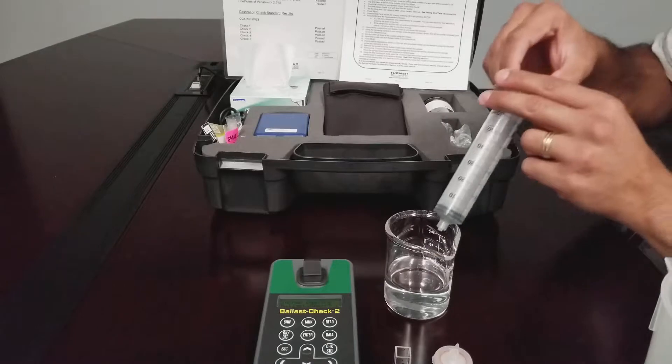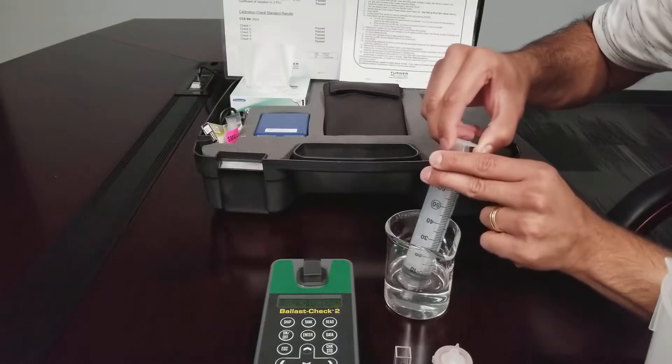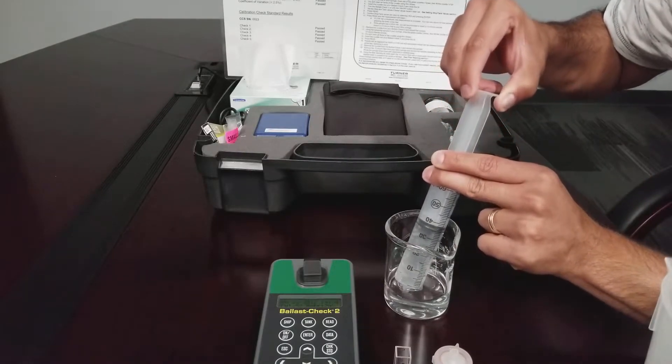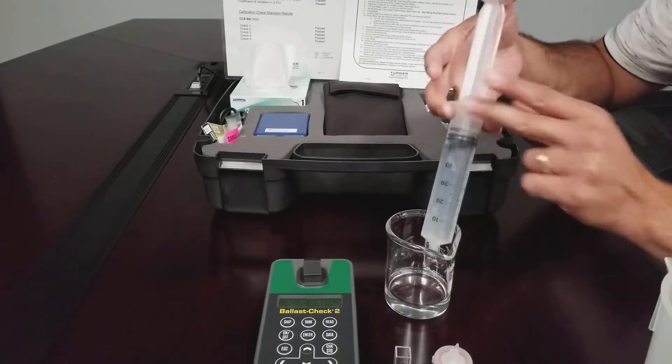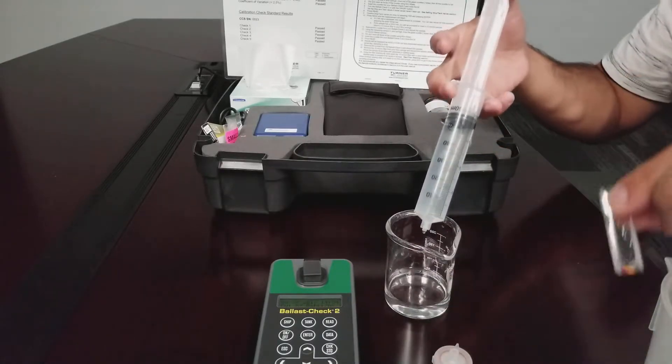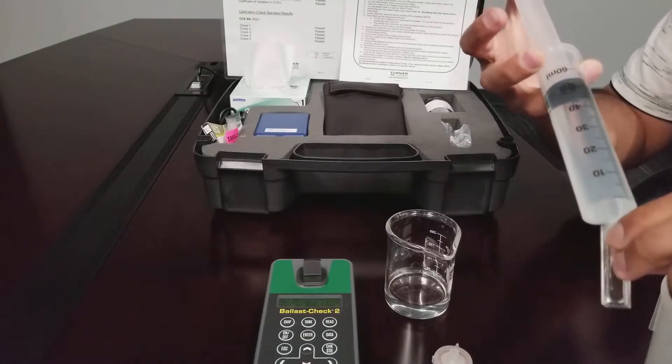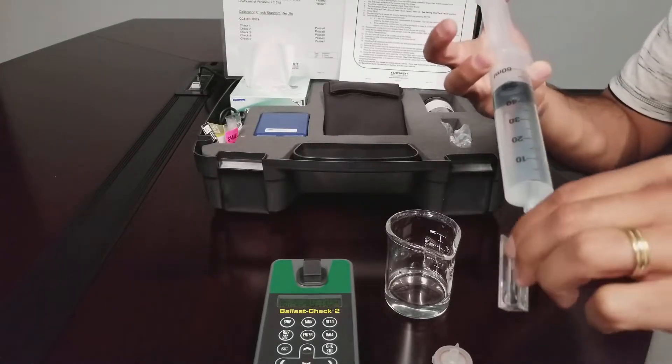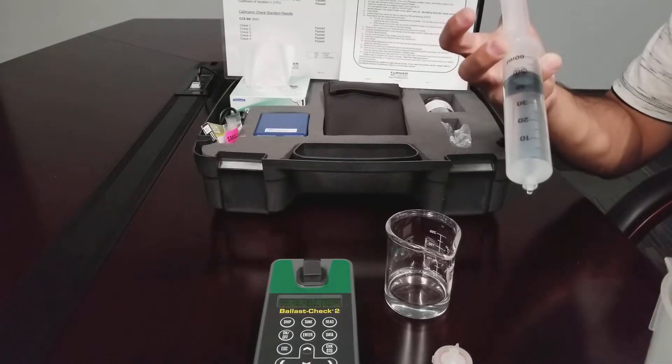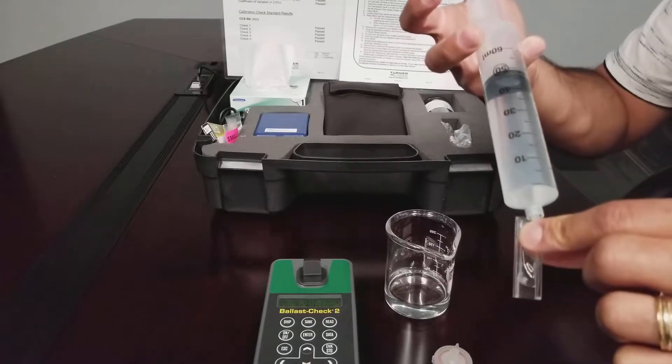Use the syringe to sample 60 cc's of ballast water. Rinse your cuvette three times with the ballast water and the syringe, and fill the cuvette three-quarters full.